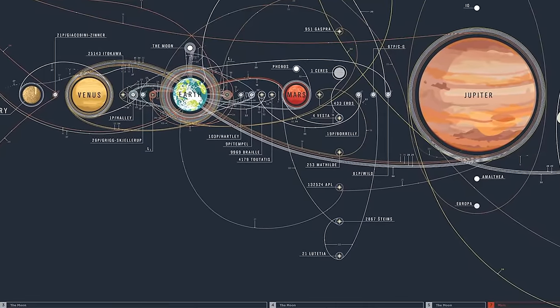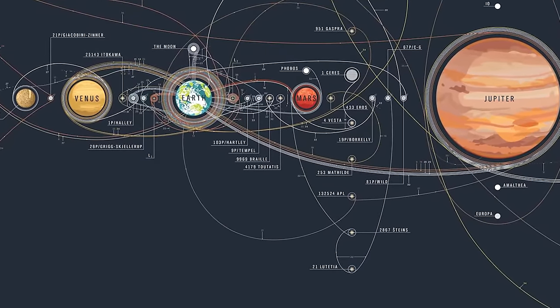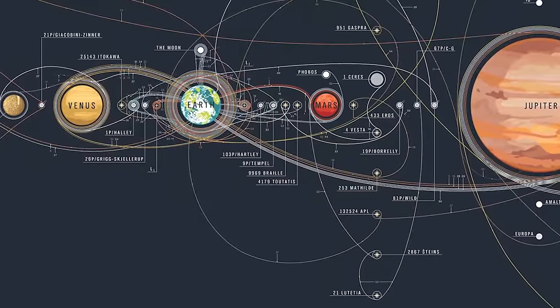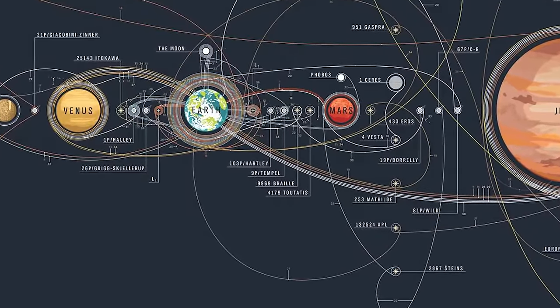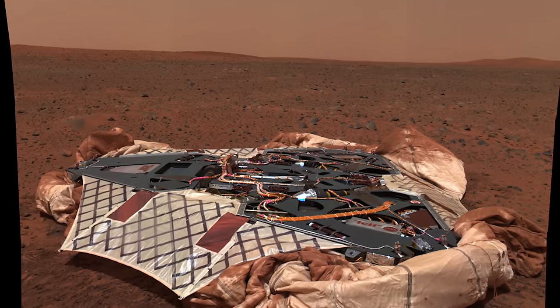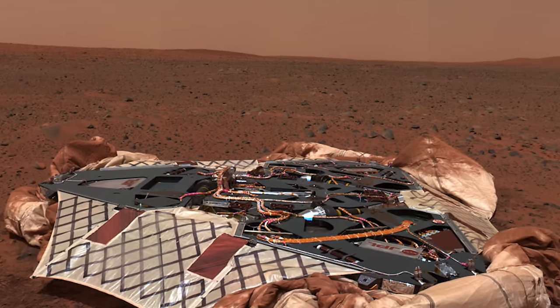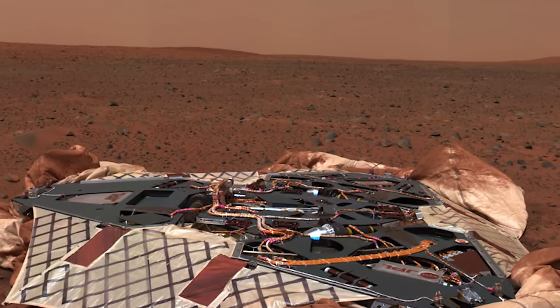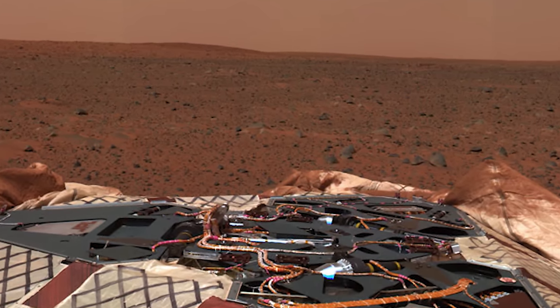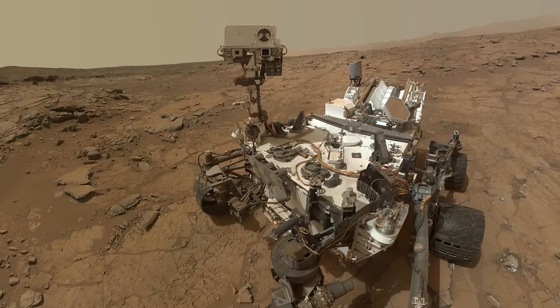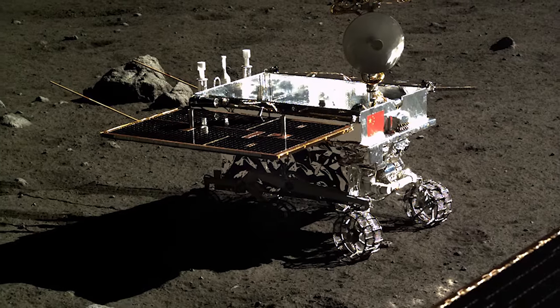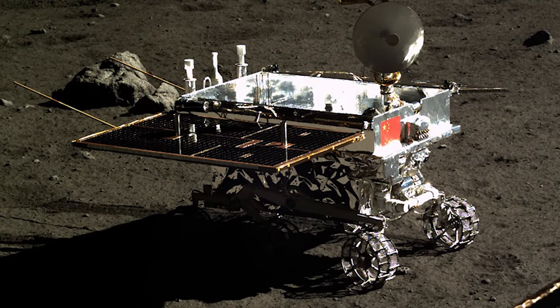Orbiters have been used to study numerous celestial bodies, including the Sun, Moon, Mercury, Venus, Mars, Jupiter, and Saturn. Except for the Sun and Saturn, landers have entered the atmospheres of the previous extraterrestrial objects as well. Rovers have only visited Mars and the Moon, but all three types of robotic spacecraft are likely to visit other worlds by 2050.